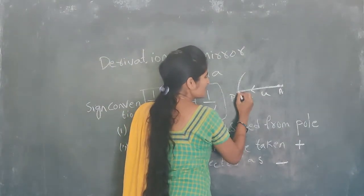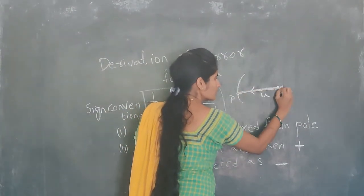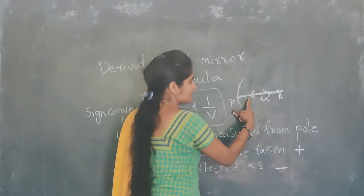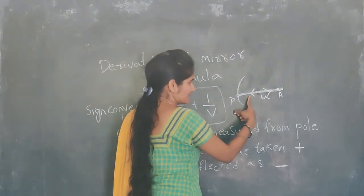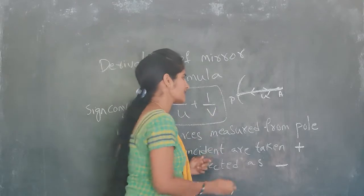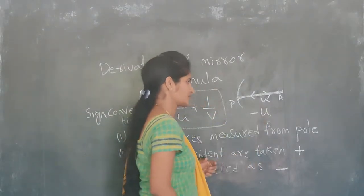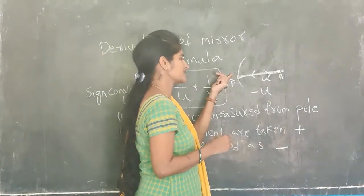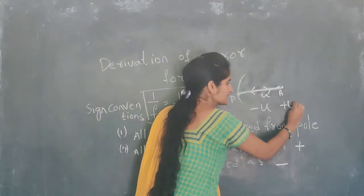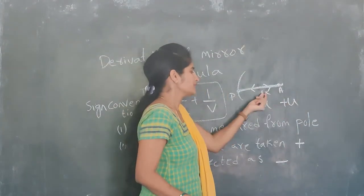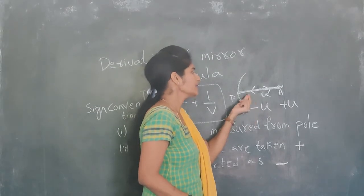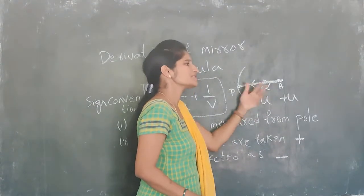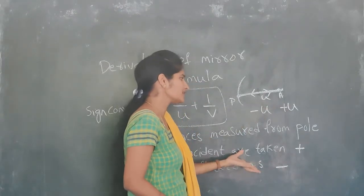For example, we measure object distance U from pole to object, which is opposite to the incident ray direction — that is why it is taken as minus U. If you measure in the direction of the incident ray it is positive; in the opposite direction, which is the reflected ray direction, it is negative.